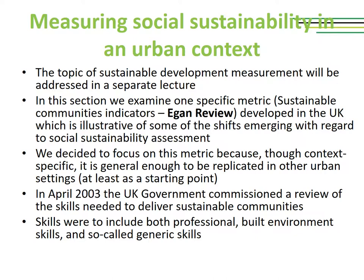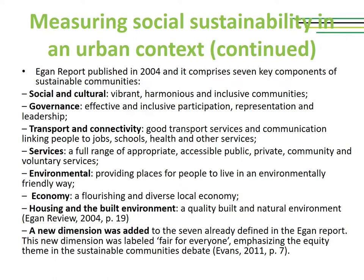How did we get to this Egon Review? In April 2003, the UK government commissioned a review of the skills needed to deliver sustainable communities. Skills were supposed to include both professional and built environment skills, as well as so-called generic skills. The Egon Report was published in 2004 and comprises seven key components of sustainable communities. Some of them are clearly linked to social sustainability, while others are more clearly linked to the physical environment.